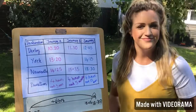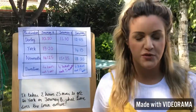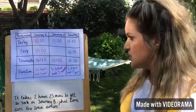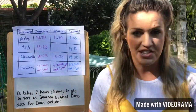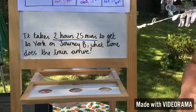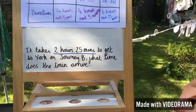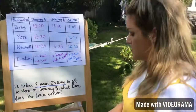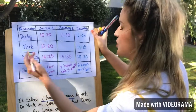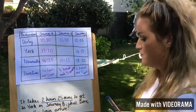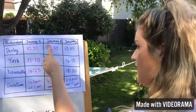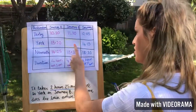Depending on which challenge you pick, you're going to have different types of questions. Some questions will ask you to work out the duration of the different train journeys, and some might ask you to fill in some of the missing information on the train timetable. Here's an example: it takes two hours and 25 minutes to get to York on Journey B — what time does the train arrive? We're looking at Journey B, and there is a gap in the timetable.